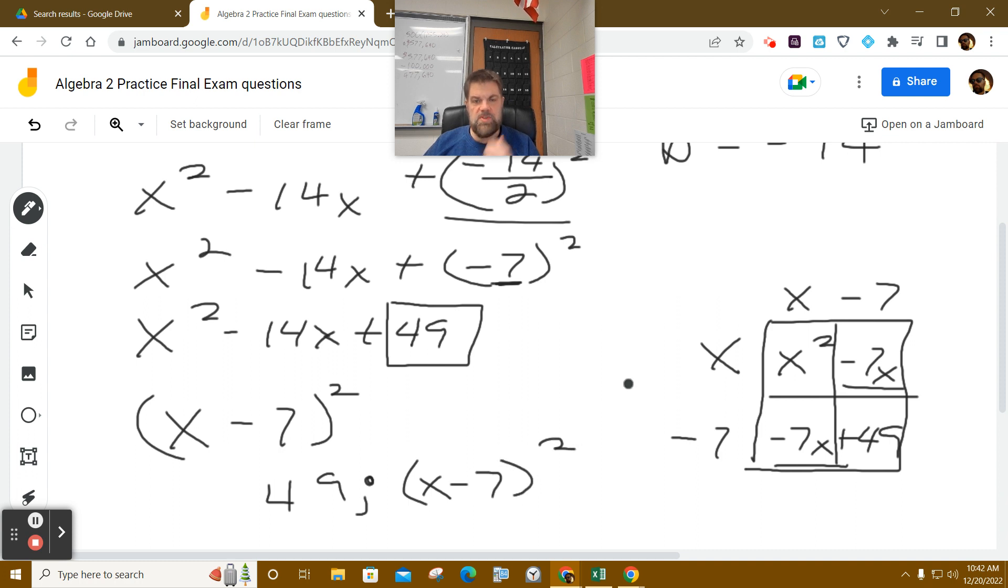So on the real exam, you're going to get a problem just like this, except it might be x minus 3 and it equals 9 or whatever. But that's the process for completing the square. Thank you.